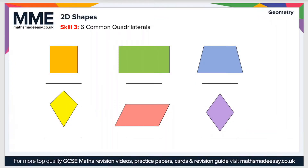The third topic is six common quadrilaterals. A quadrilateral is just a four-sided shape. The first is a square, which we've already seen — it's a regular quadrilateral. Its main features are that all sides are equal and all internal angles are equal at 90 degrees.